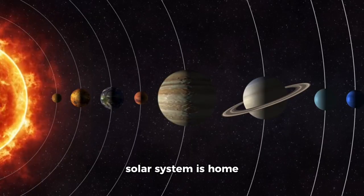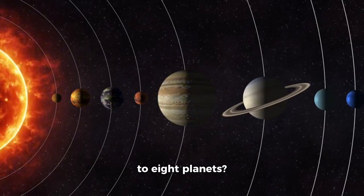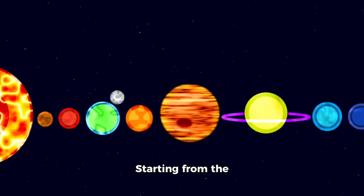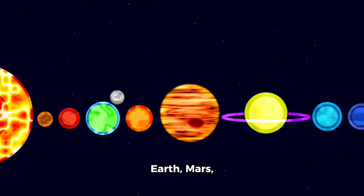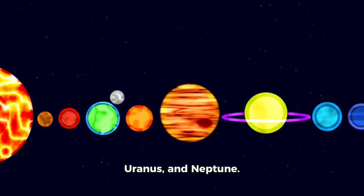Did you know that our solar system is home to eight planets? Yes, that's right. Starting from the sun, we have Mercury, Venus, Earth, Mars, Jupiter, Saturn, Uranus, and Neptune.